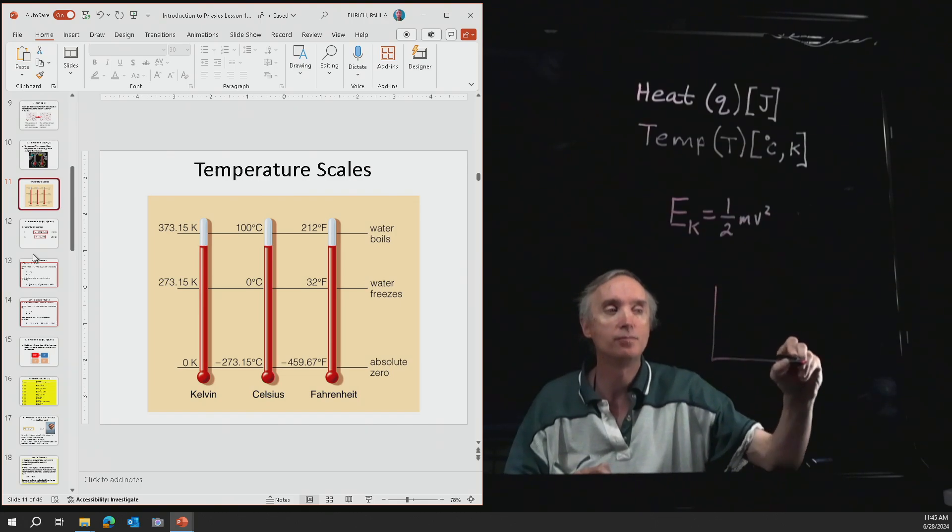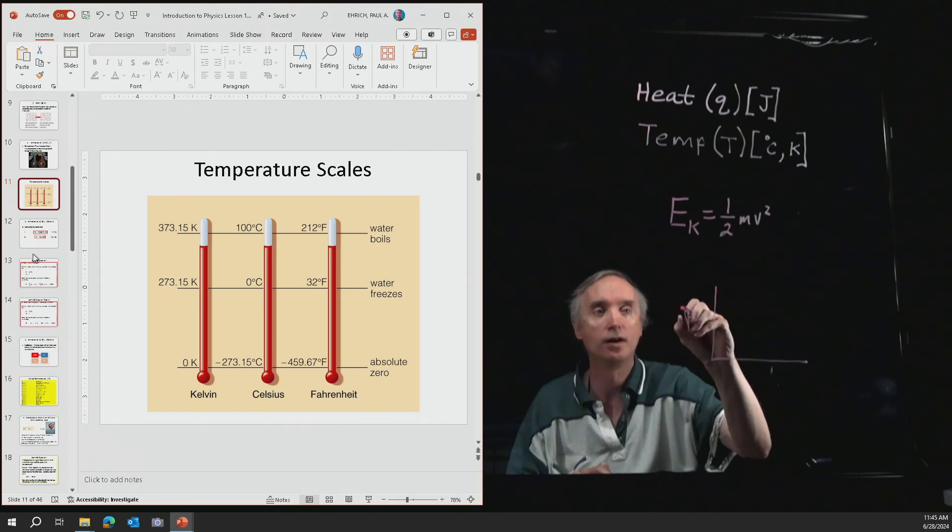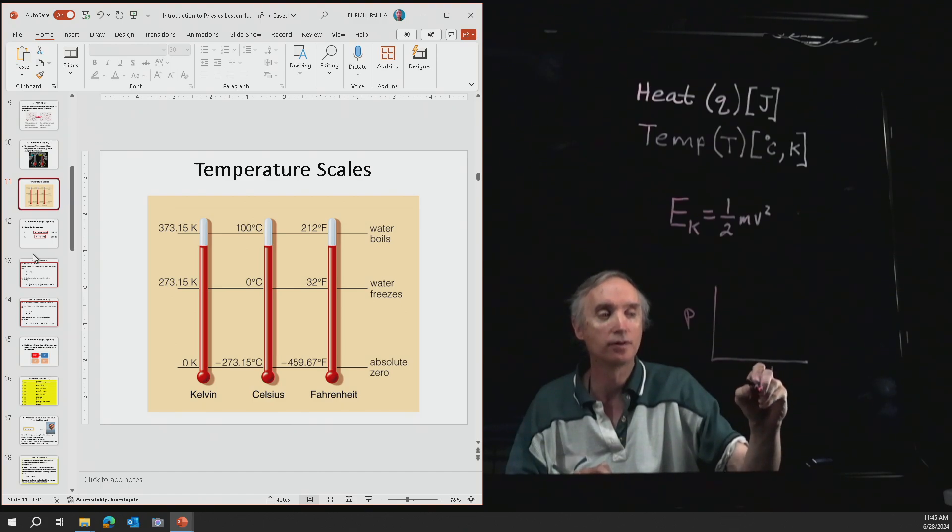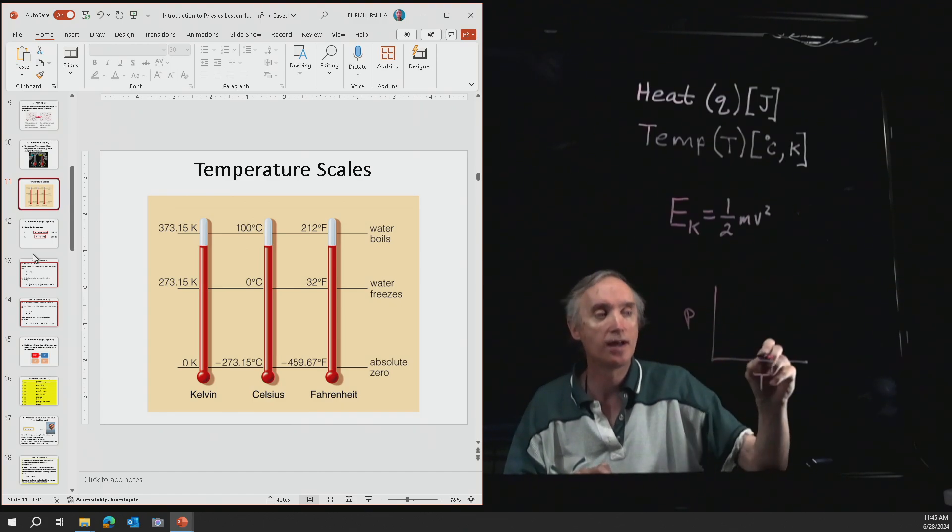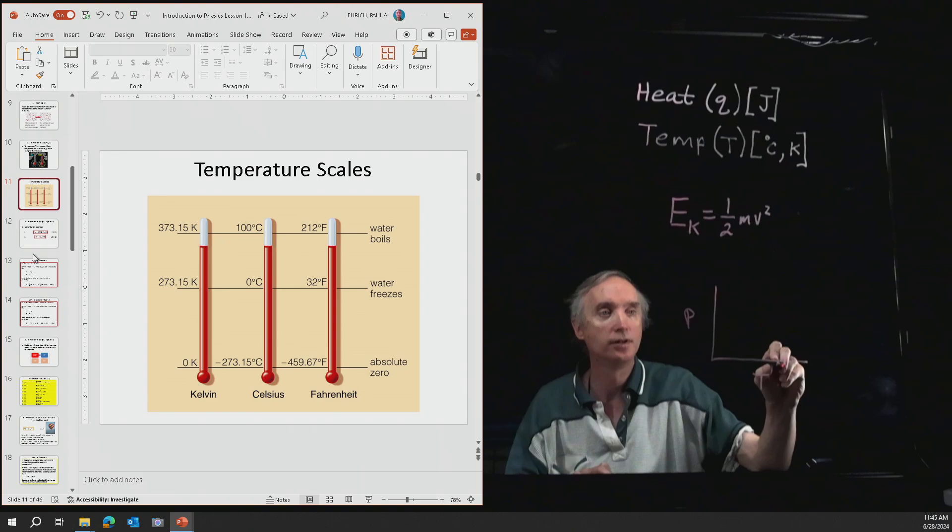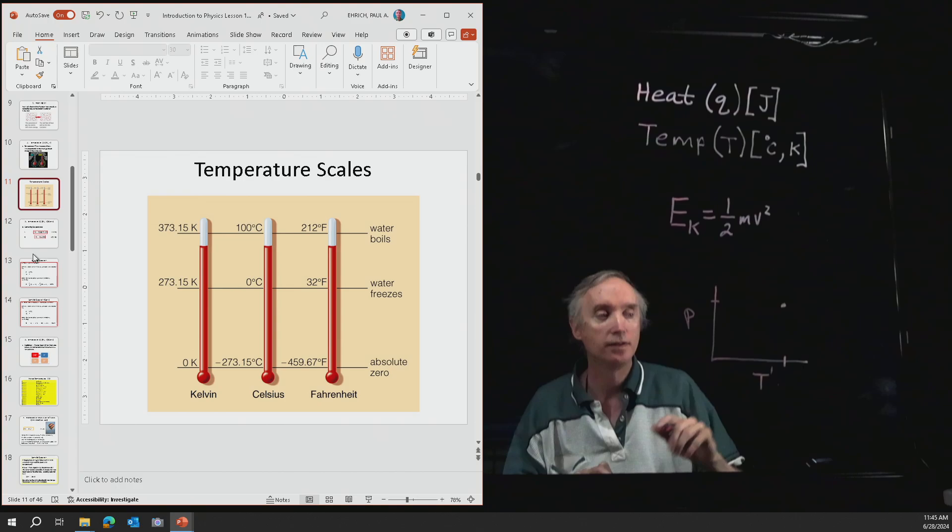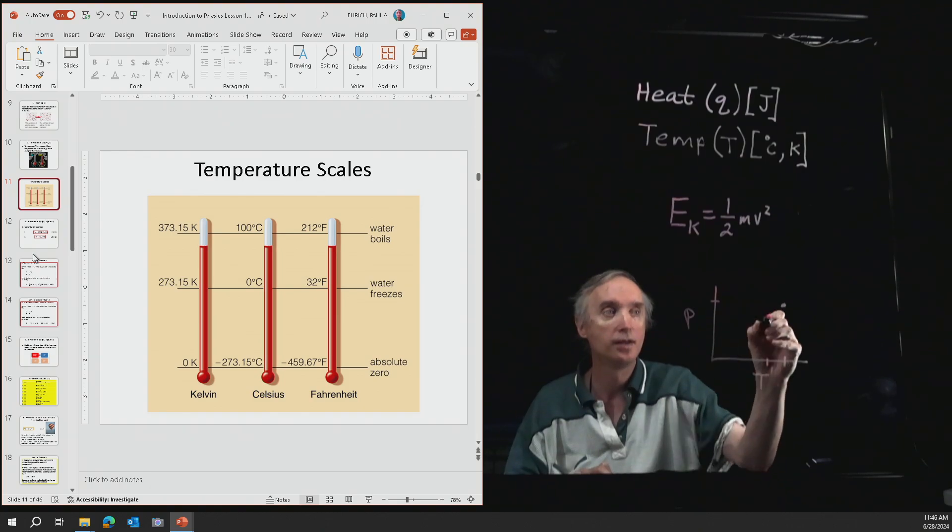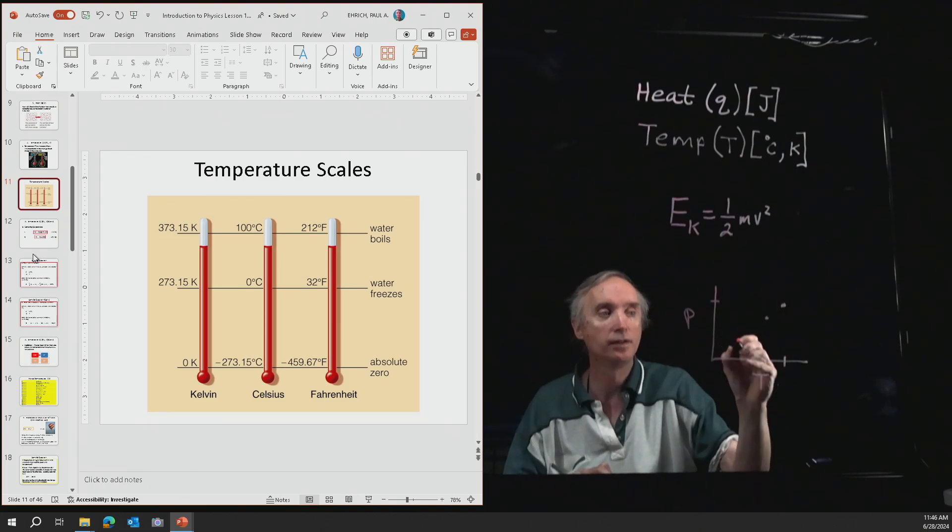They measured the pressure of a gas, and they measured the temperature of a gas. At a certain temperature, it's going to have a certain pressure, and then they plotted that on a piece of paper. Then they lowered the temperature of the gas, and what they found was the pressure went down. And then they lowered the temperature again, and they found out that the pressure went down again.